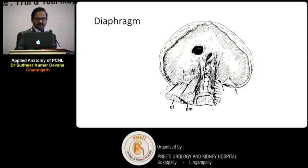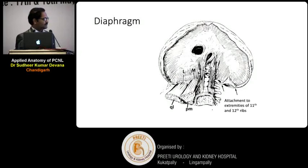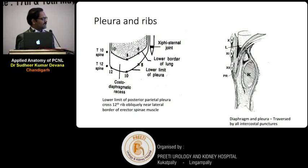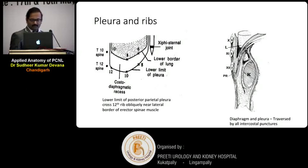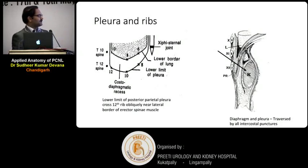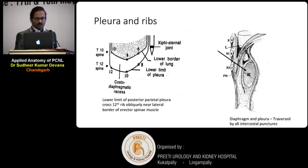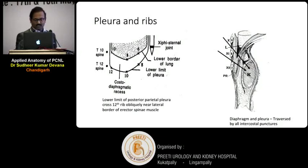Coming to the relations of the diaphragm: in PCNL, when you are approaching the kidney posteriorly, at the level of the 12th rib and 11th rib you have the attachments of the diaphragm. Regarding pleural relations, at the T12 level posteriorly, you have the reflection of the pleura. So whenever you are traversing the kidney from behind and doing a supracostal puncture, the 12th, 11th, and 10th ribs are positioned just above the kidney. When going through this track, you will be violating the pleura, and if you are doing a supra-11th puncture, there is an even higher chance of injury to the pleura.